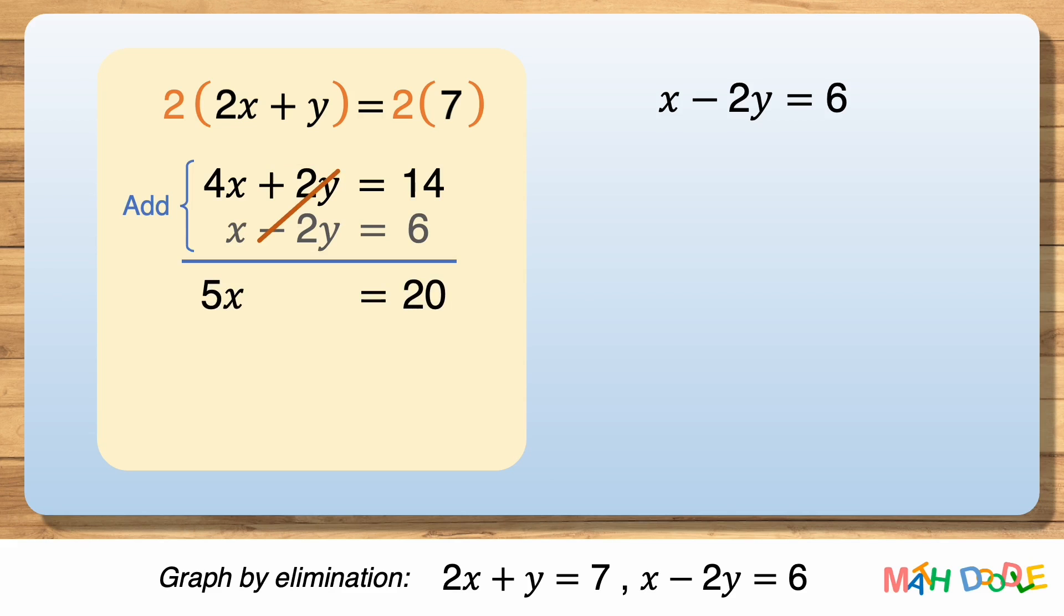Then, by dividing both sides by 5, the equation becomes x equals 4. And this tells us that x is 4.